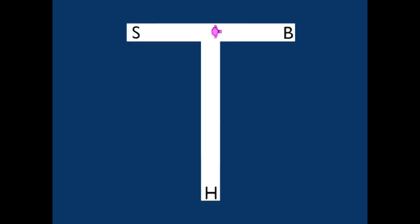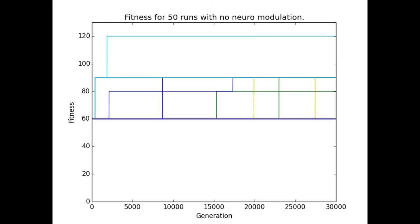In fact, we see this happen in my experiment. First, we will see the fitness over 30,000 generations for 50 runs of evolution with no neuromodulation. We see little success in advancing fitness from any of these runs.